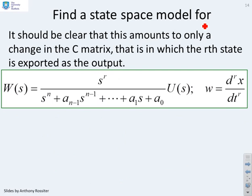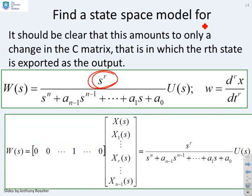What happens if I want s to the r in the numerator? Well, hopefully it's obvious what I do now. I simply put this 1 in the r plus 1th position. Because the first position, you remember, corresponds to s to the 0, the second position to s, the third position to s squared, and so on. So this 1 will correspond to s to the r. So if I put a 1 in the r plus 1th position of c, that will extract xr, which is s to the power r.